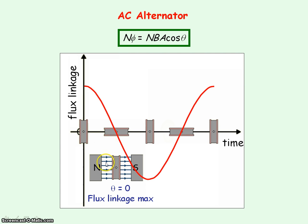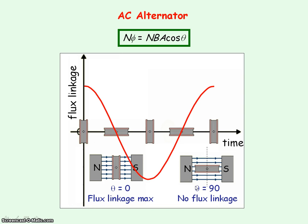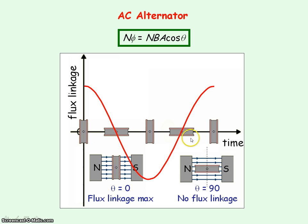When the plane of the coil is parallel to the magnetic field lines, then theta — remember, that is the angle between the magnetic field line and the normal to the plane of the coil — will equal 90 degrees. Cos of 90 degrees is zero, so there's no flux linking the coil. That will occur at a quarter of a period and three quarters of a period.